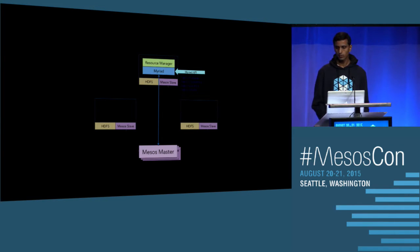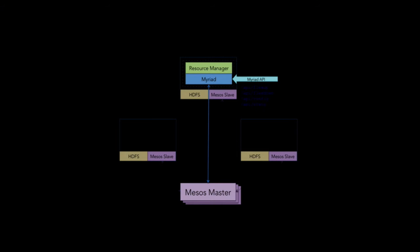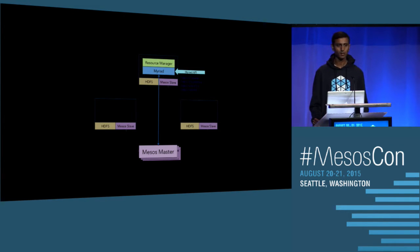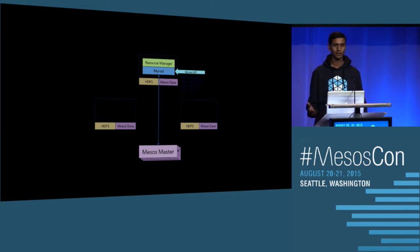The admin can interact with Myriad via a REST interface. The most important APIs are FlexUp, FlexDown, Config, and State. FlexUp helps the admin scale up the Yarn cluster by launching multiple node managers. FlexDown brings down the Yarn cluster to a limited number of node managers. Config queries the current configuration used by Myriad, and State queries the current state — how many node managers are running, how many are in staging, and how many have been killed or died.